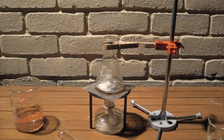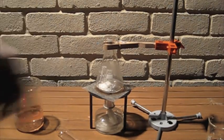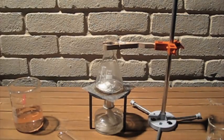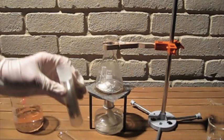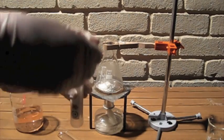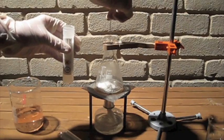In this flask I have a small amount of calcium hydroxide. To that I'm going to add an even amount of ammonium chloride. This will produce water, ammonia gas, and calcium chloride.